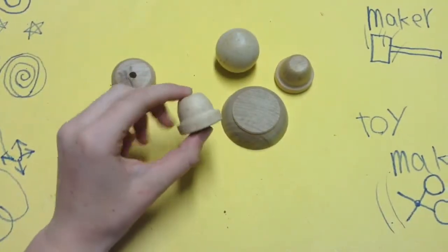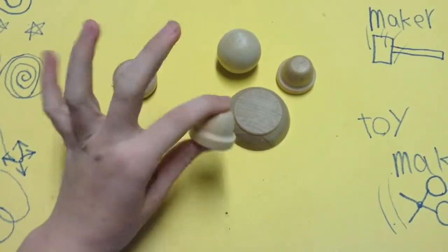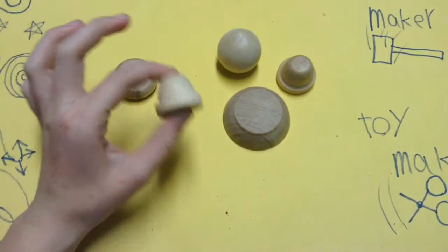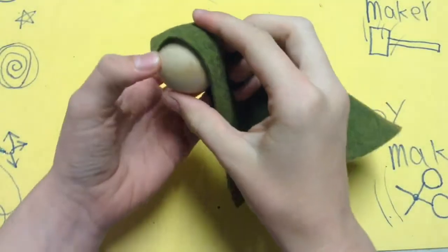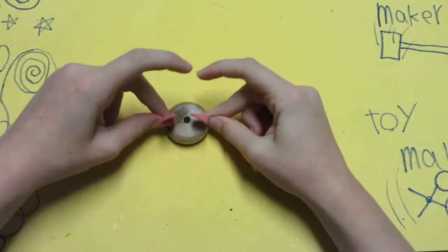First step is just to figure out what kind of creatures you want your little wooden things to be. For example, what if this one had like a little gnome hat? A dragon? It's gonna be so cute.